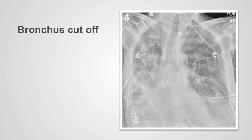Tracheal or bronchial narrowing can be focal or diffuse. The narrowing sometimes can lead to complete obstruction of the affected bronchus. When this occurs, the air within the bronchus will be completely lost or cut off. In this example, we can follow the trachea inferiorly, identify the left main stem bronchus, but we can only see the more proximal portion of the right main stem bronchus, as there is complete and abrupt cut off of the air within the bronchus by an underlying endobronchial tumor.